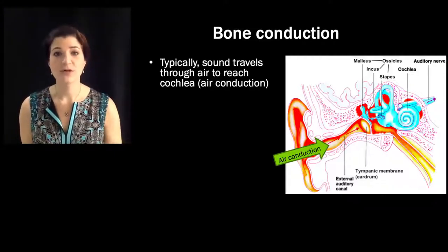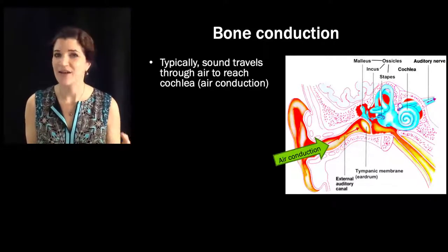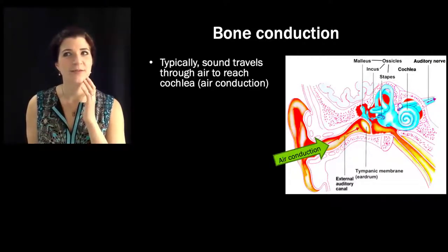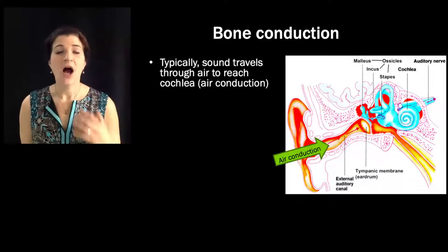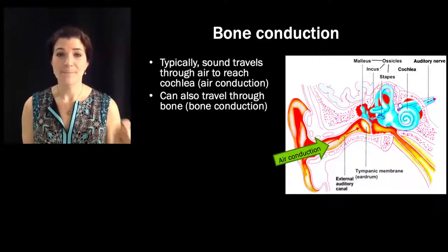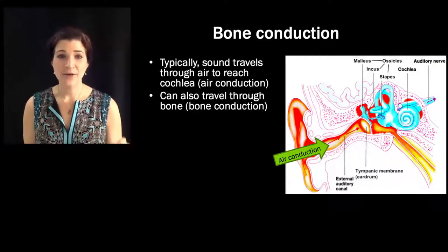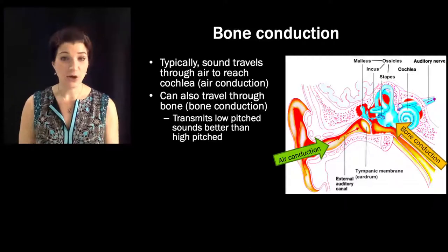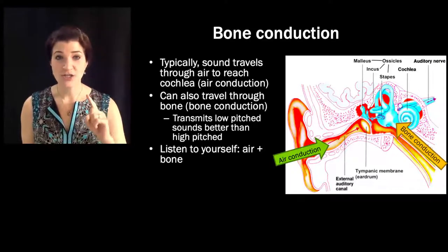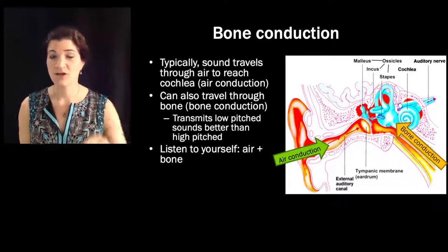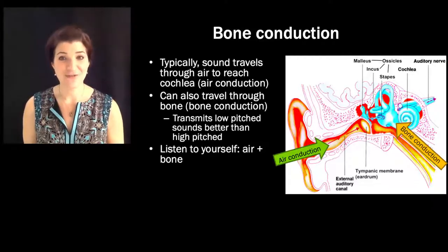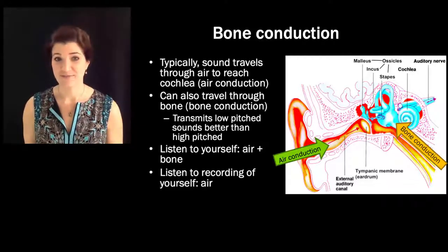But when you talk and your vocal cords vibrate, it also makes the bones in your head vibrate slightly — talking right now is making my jaw vibrate a little bit, causing my skull to vibrate from the sound of my voice. Bones and other solids transmit lower pitches better than higher pitches, meaning the sounds that reach your ear via bone conduction emphasize low frequencies more than high frequencies. So normally when you hear yourself talk, you're getting both air conduction and bone conduction. But when you listen to yourself in a recording, you only get the air conduction — the bone conduction isn't there.